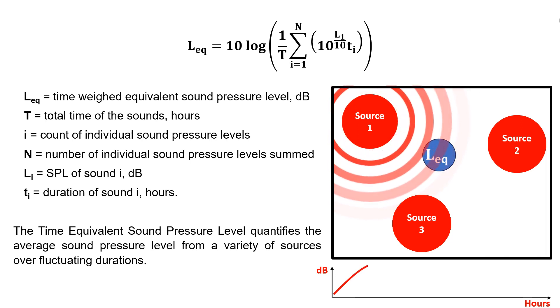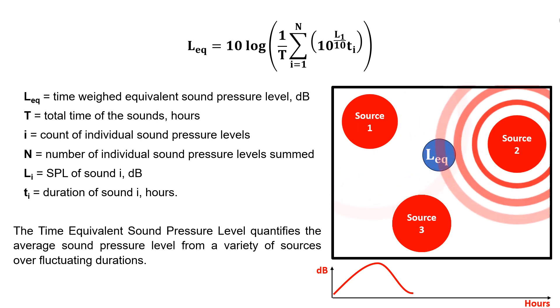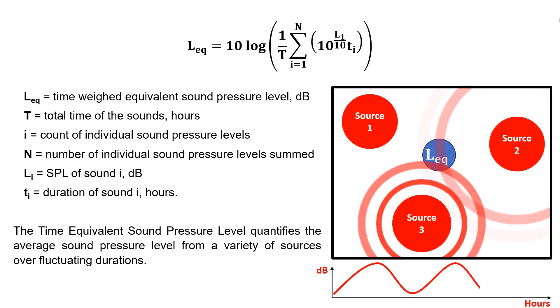As you can see in the animation, if you measure sound levels in a busy work area for eight hours, then you can calculate the time equivalent sound pressure level based on all sources from machine and equipment. And you would get a single value that represents the equivalent sound level over that eight hours period. Time equivalent sound pressure level is used in situations where sound levels vary over time and help us understand variations in noise exposure.